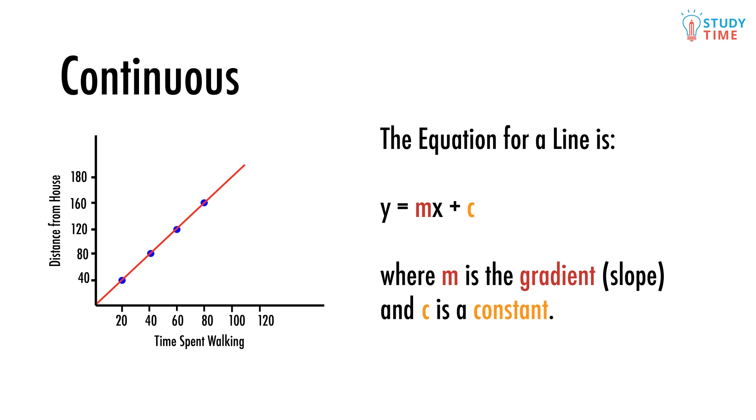c is called a constant. It's a number that never changes, hence constant. We'll see what it means later. For a straight line, the gradient is the same everywhere on it.